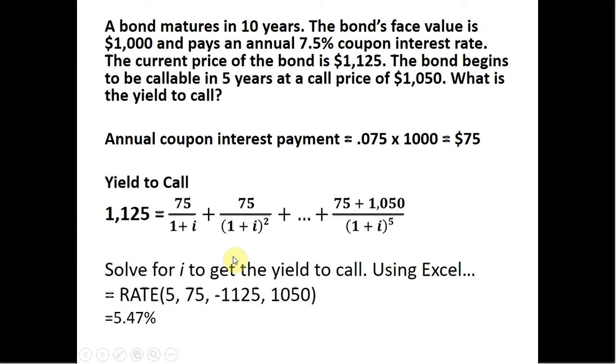To solve for i, i will be the yield to call. We'll use the Excel command RATE, which is equal RATE with what's in parentheses here. The 5 represents the year in which the bond begins to be callable. $75, you'll notice, is the coupon interest payment. This minus $1,125 is just minus the current price of the bond, and $1,050 is the call price. Plugging that into any cell in Excel, we will get a yield to call of 5.47%.